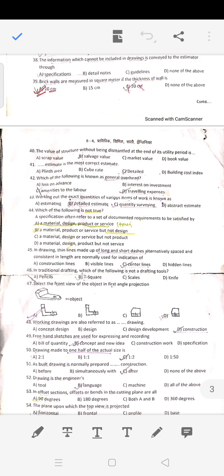Question 46 and 47: Select the front view of the object in first angle projection. In first angle projection, the object is placed in the first quadrant. The right side view will be on the left side, and the left side view will be on the right side, with the top view below.